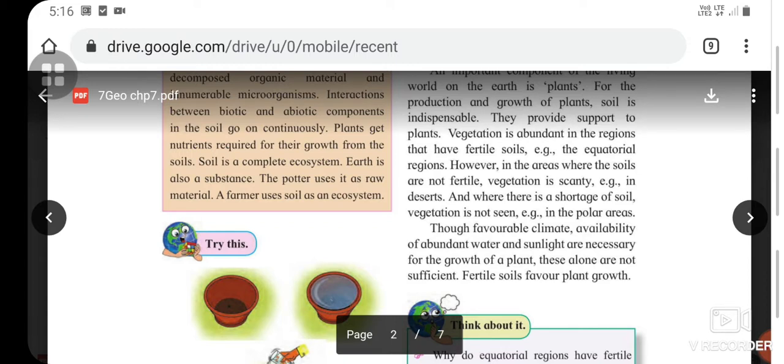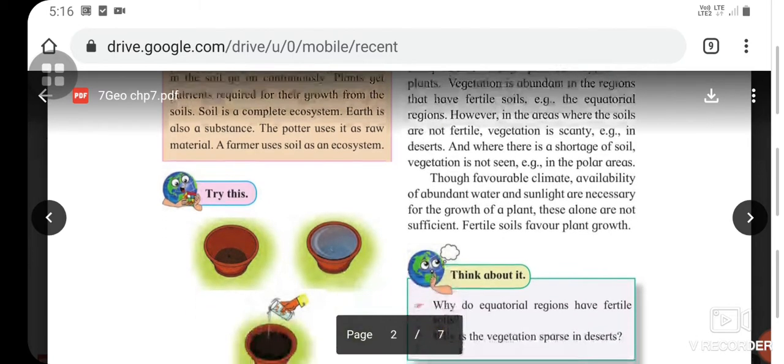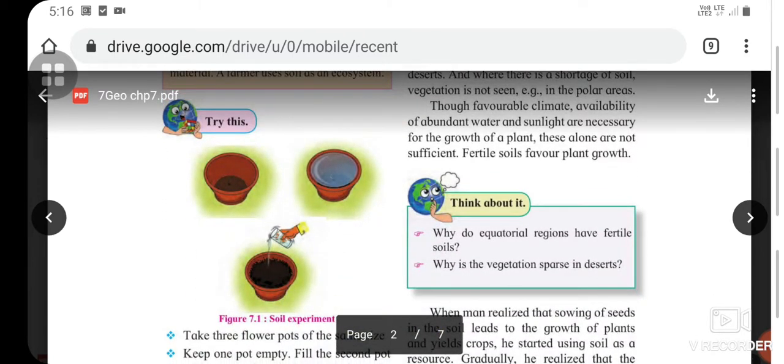In places where there is shortage of soil, vegetation is not seen, for example in polar areas. Though favorable climate, availability of abundant water and sunlight are necessary for plant growth, these alone are not sufficient. Fertile soils favor plant growth. Think about why equatorial regions have fertile soils and why vegetation is sparse in deserts.